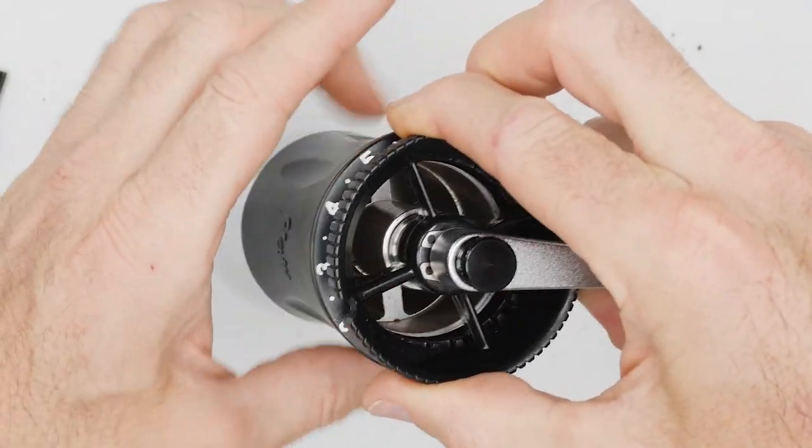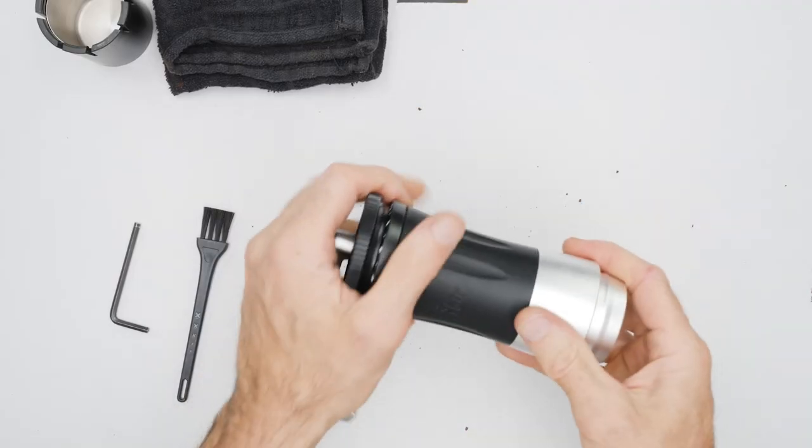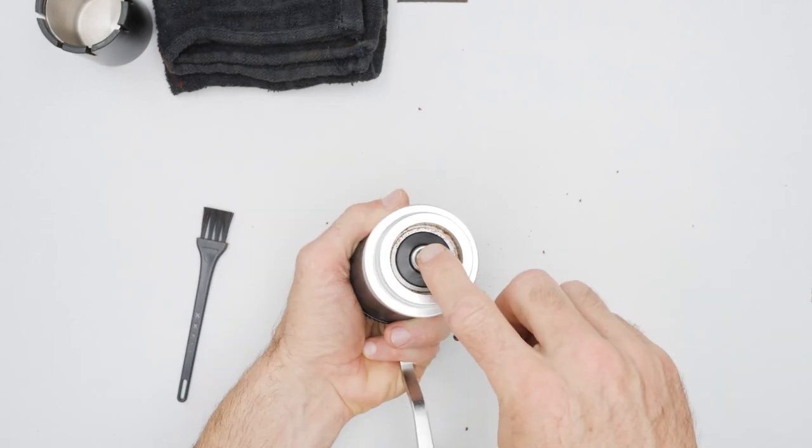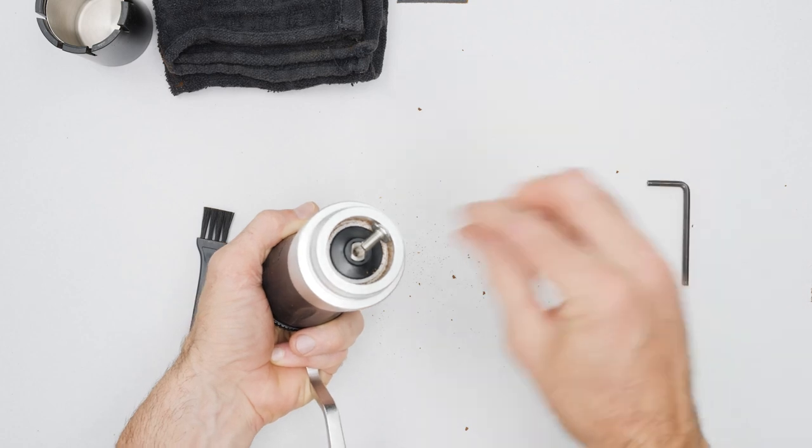Before removing the cone burr, it's important to set the grinder to a coarse setting. Secure the crank with one hand, then using the four-millimeter Allen key, loosen and remove the bolt securing the burr and the burr retainer to the axle.